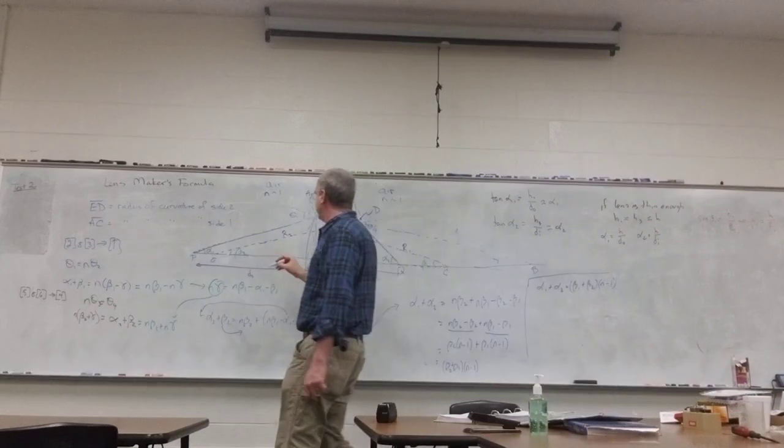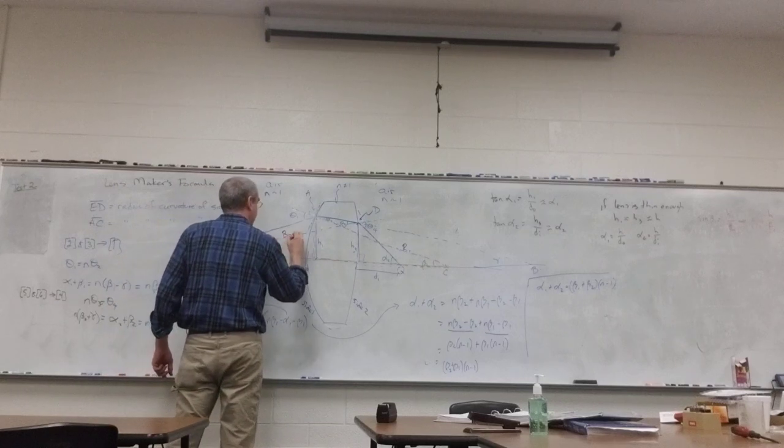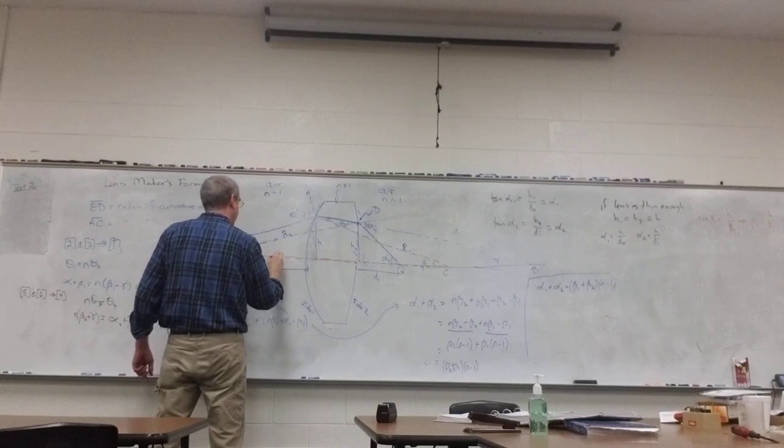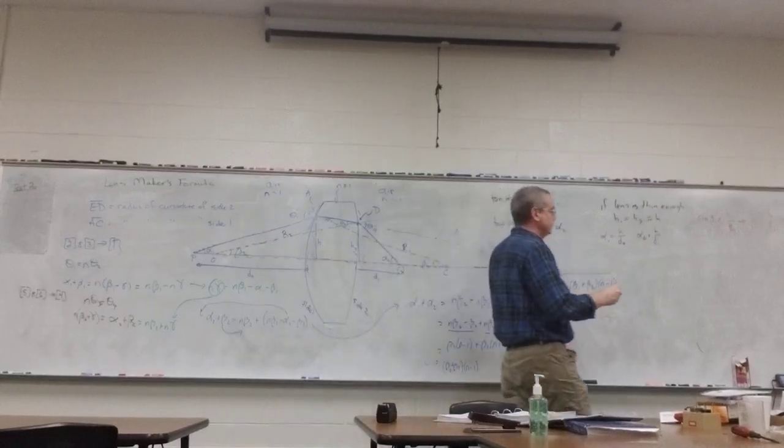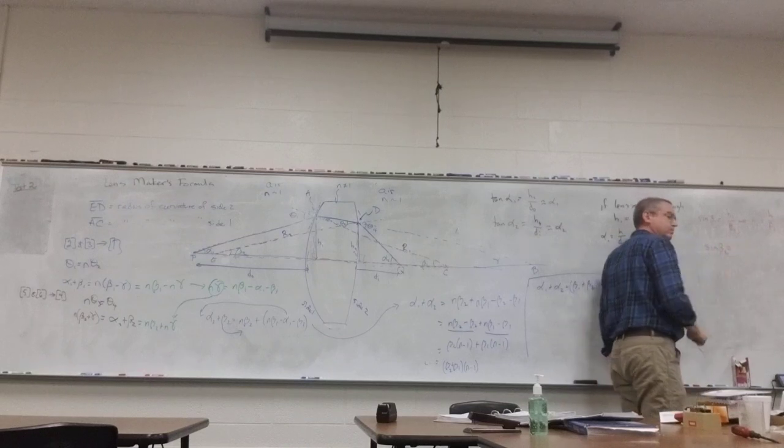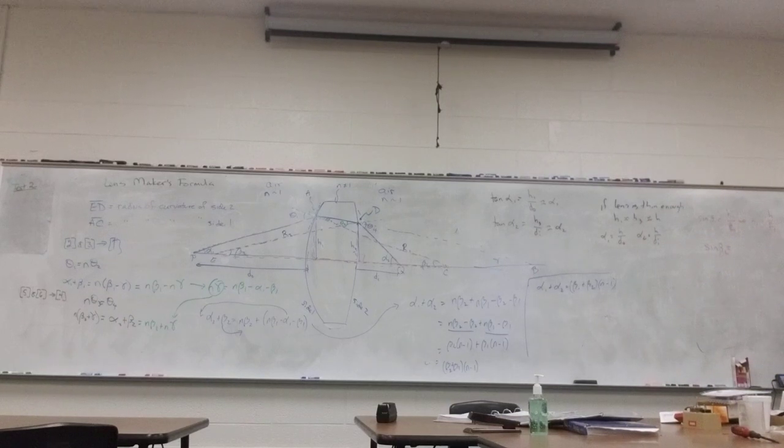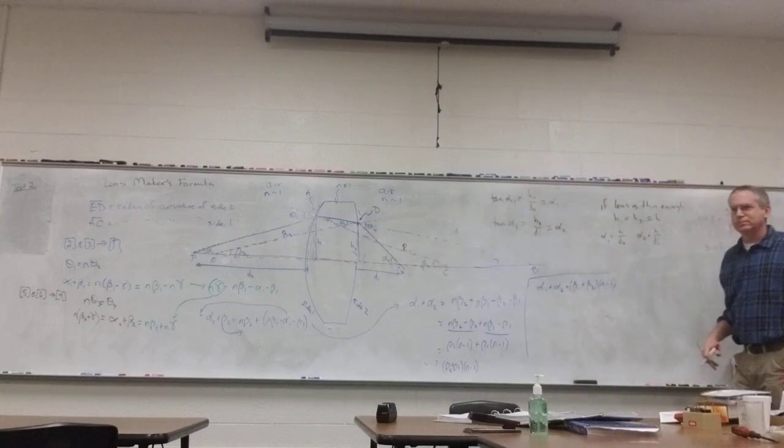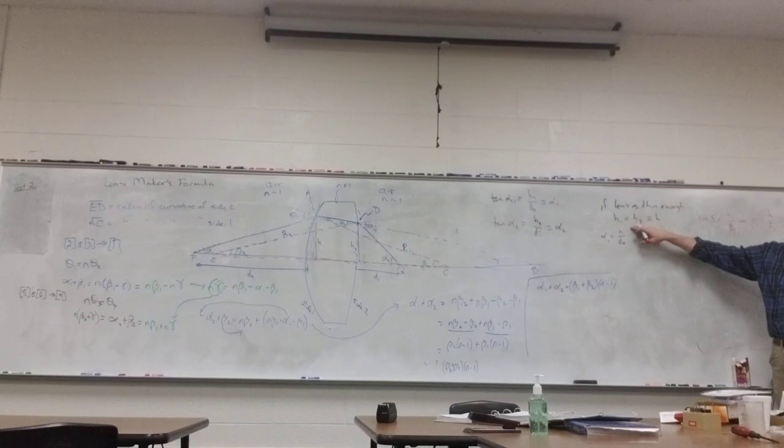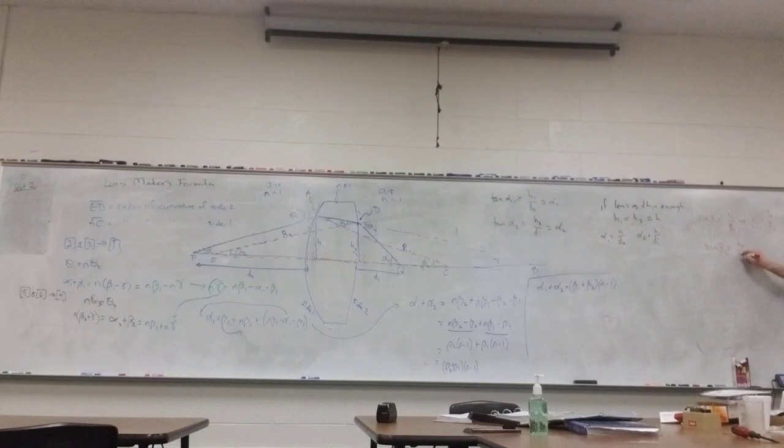Doing the other triangle here, from this red triangle from E to D to H3. Sine of beta 2. H3 over R2. Not H1. H3. Unless, of course, you're going with they're roughly the same. But officially, H3 over R2, which is beta 2 is approximately H over R2. We're now ready to plug in here.